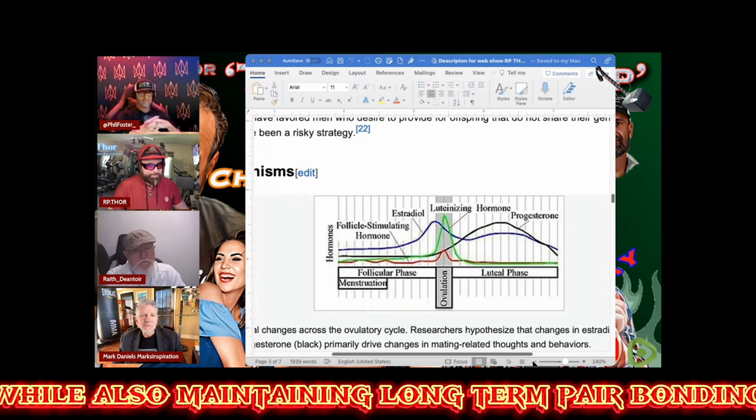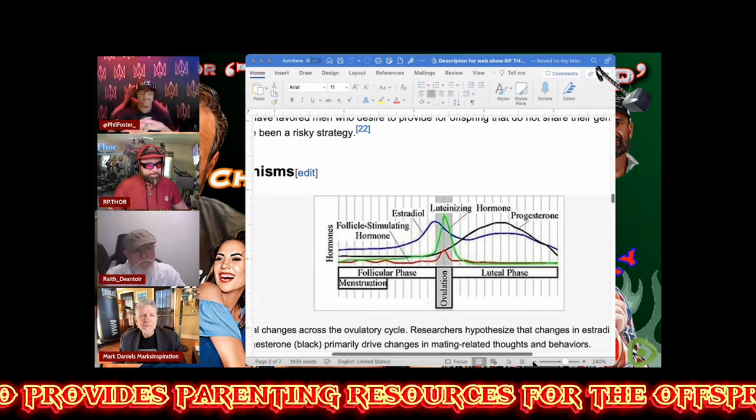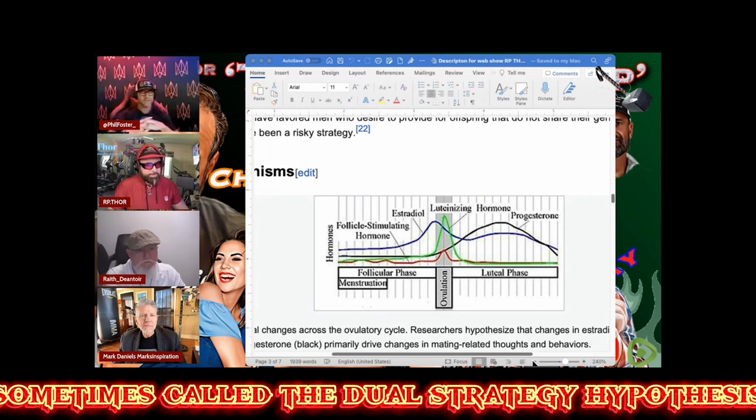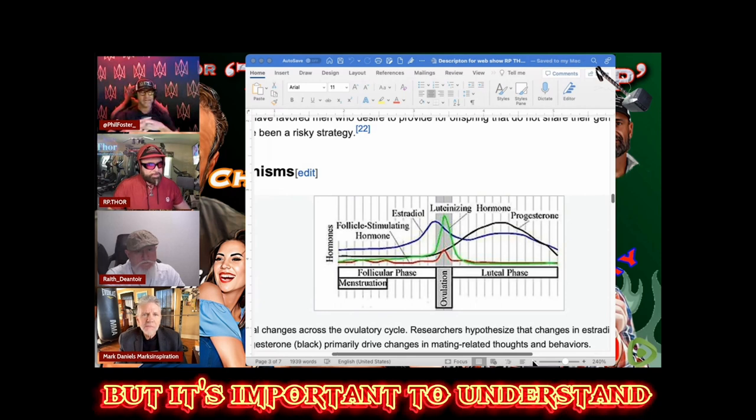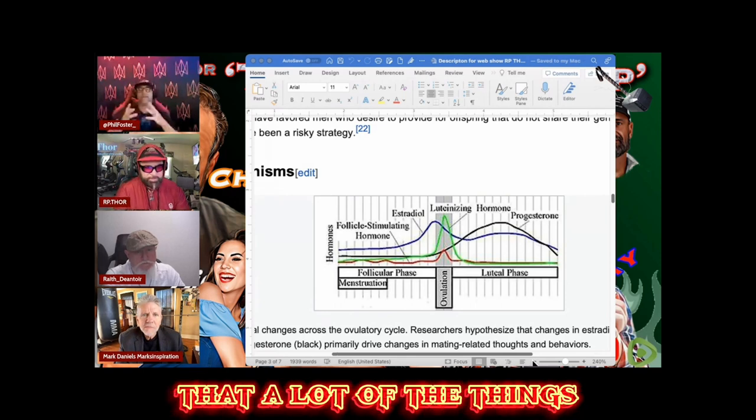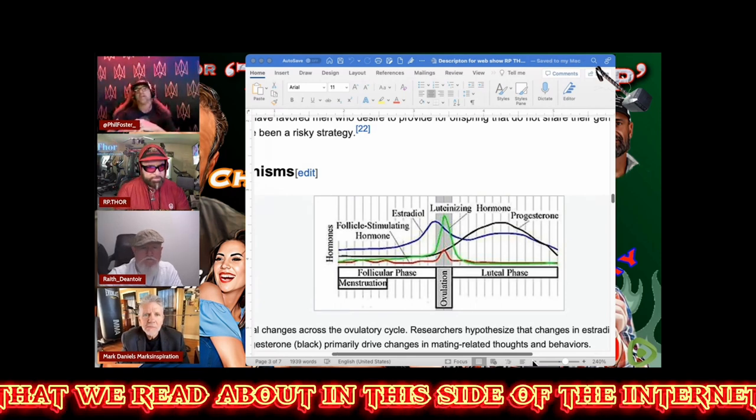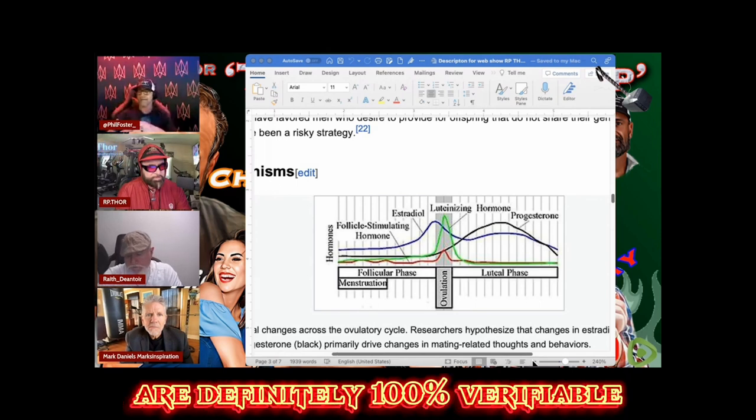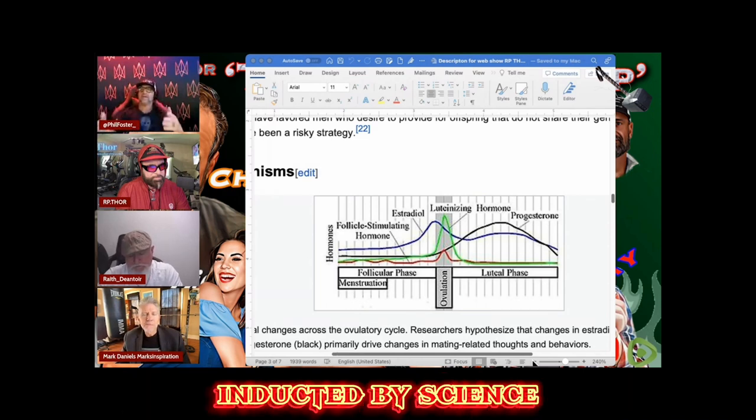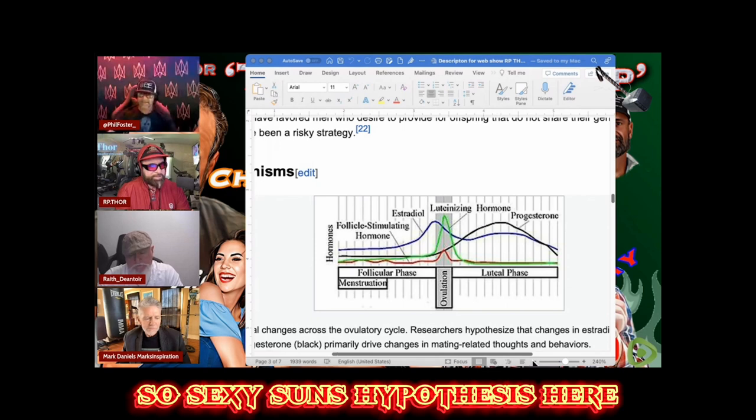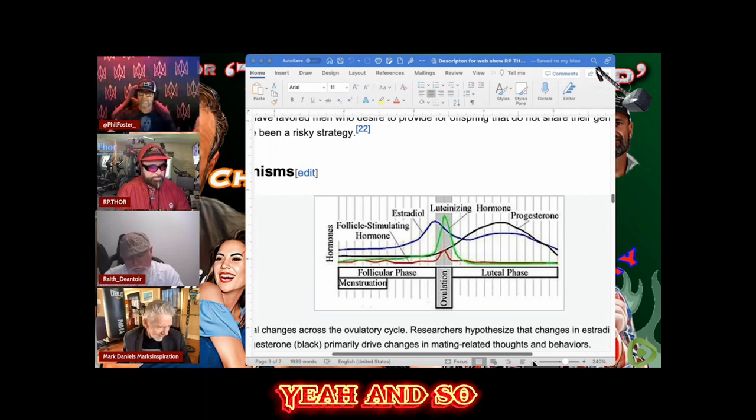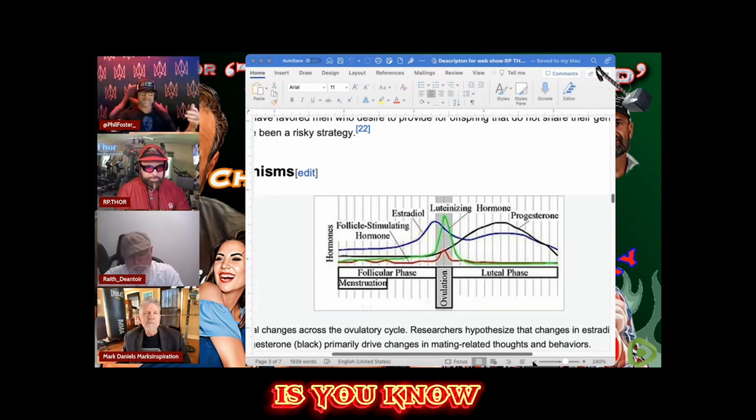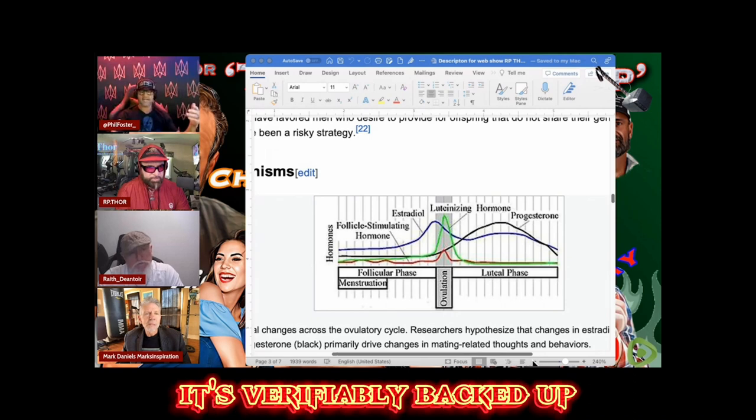While also maintaining long-term pair bonding with their partner who provides parenting resources for the offspring, sometimes called the dual strategy hypothesis. Once again, you can find this on Wiki, but it's important to understand that a lot of the things we read about in this side of the internet or listen to on podcasts or live streams are definitely 100% verifiable and backed up by science.